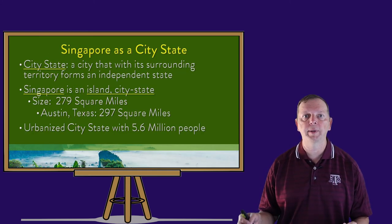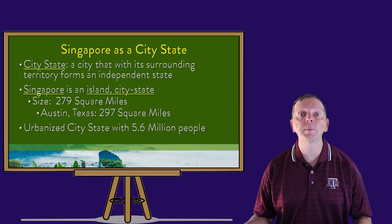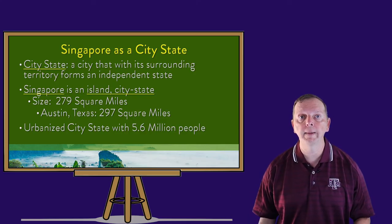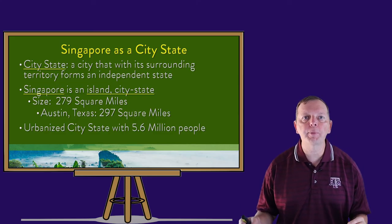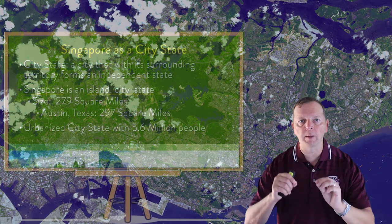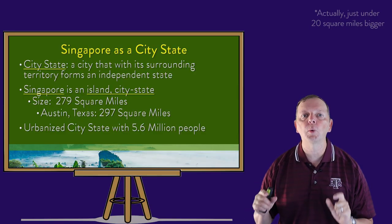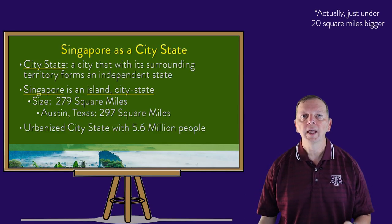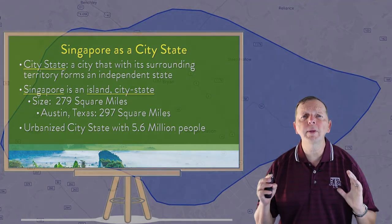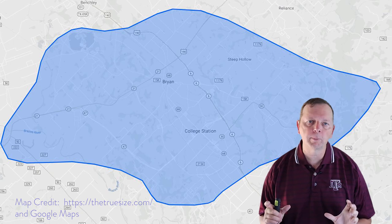We talked about city-states when we discussed ancient Greece. A city-state is a city that forms its own independent state. Singapore really is a city on a fairly small island — only 279 square miles. To put that in perspective, the city of Austin, Texas, is over 20 square miles larger. In another way, Singapore is about the same size as Bryan and College Station, Texas, and all the suburbs.